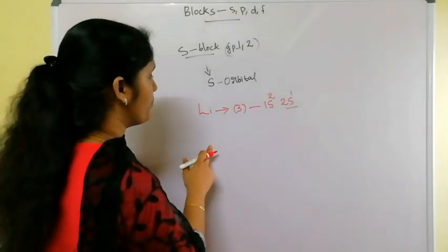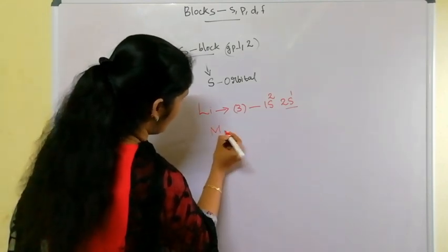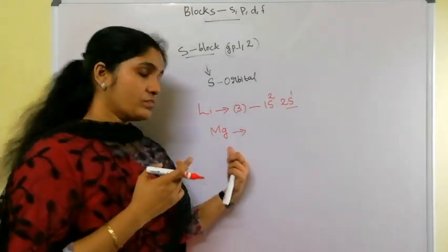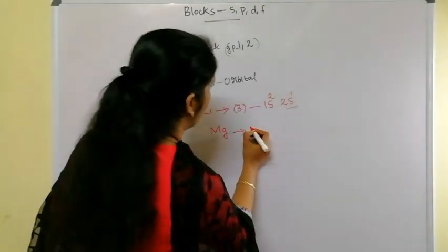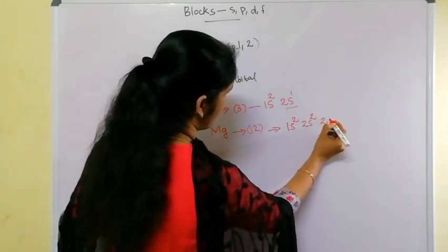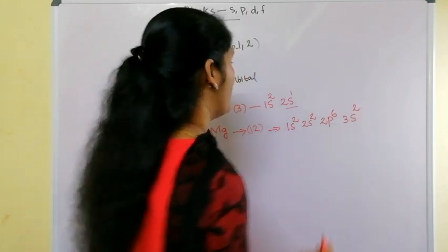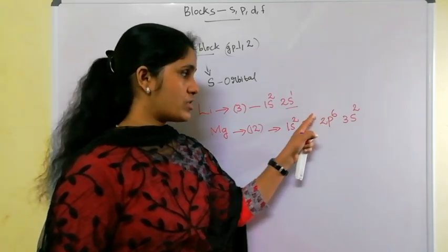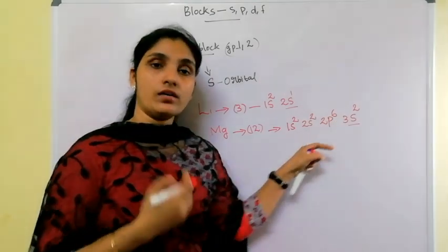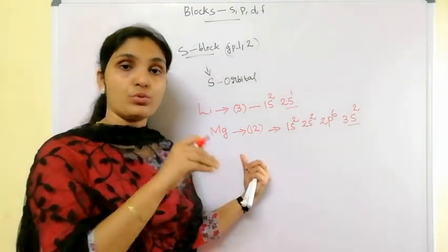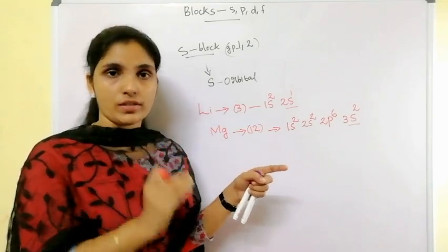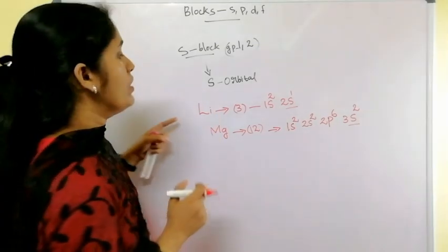Let's take another example from the alkaline earth metals — magnesium. Its atomic number is 12. Its electronic configuration is 1s² 2s² 2p⁶ 3s² — that gives us 2+2+6+2 = 12 electrons. Here also, the last electron enters the s orbital (3s²), so magnesium belongs to the s-block. Wherever the last electron of an element enters the s orbital, that element belongs to the s-block.